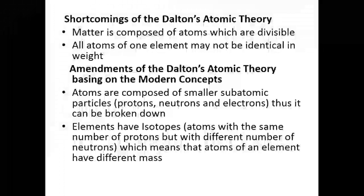Isotopes by definition are atoms with the same number of protons (same atomic number) but a different number of neutrons, or a different mass number. This means atoms of an element can have different masses. For example, chlorine has isotopes with atomic masses of 35 and 37, and the average atomic mass is 35.5. This was an improvement made by science and technology.